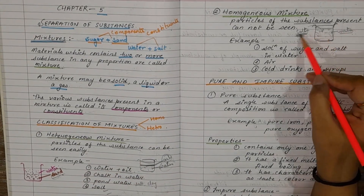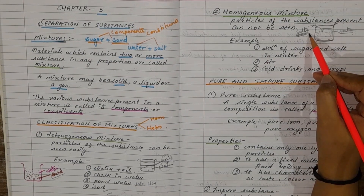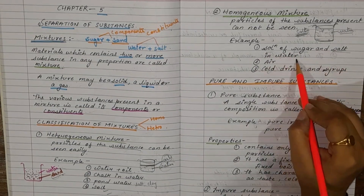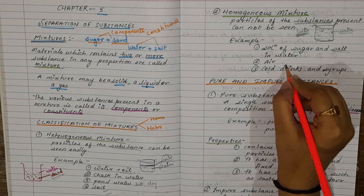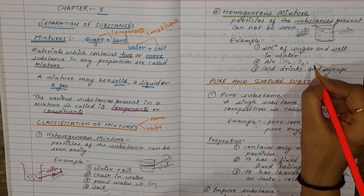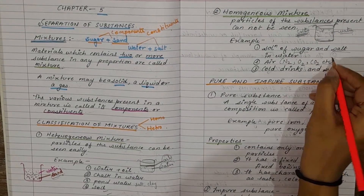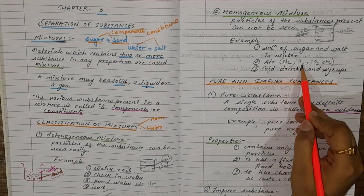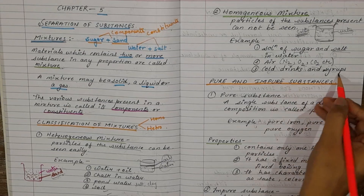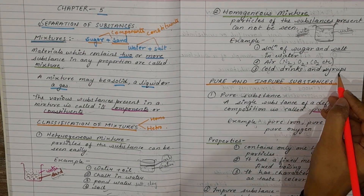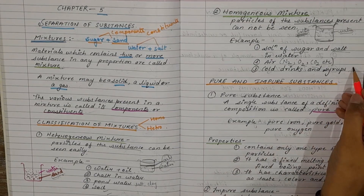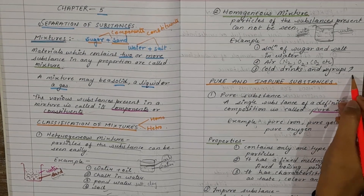Other examples of homogeneous mixture include solution of sugar and salt in water, and air. Air is a homogeneous mixture of gases like nitrogen, oxygen, carbon dioxide, and various other gases. Cold drinks and syrup are also homogeneous mixtures because they are mixtures of sugar, colour, and flavouring agents in water, and we cannot separately identify the individual constituents.